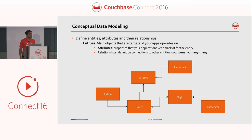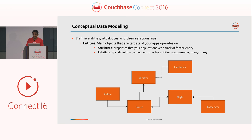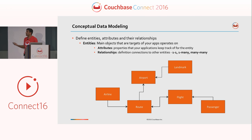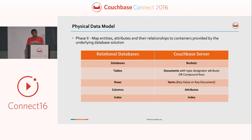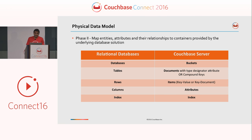Conceptual data modeling talks about the data from 10,000 feet. You identify the various entities in your application. For example, in an airline application you have airline, airport, route, landmark, and passenger as various entities. Then you go directly into physical data modeling, because usually, due to the lack of tools in NoSQL, we do not go into logical data modeling. Physical data modeling maps entities, attributes, and relationships to the containers.